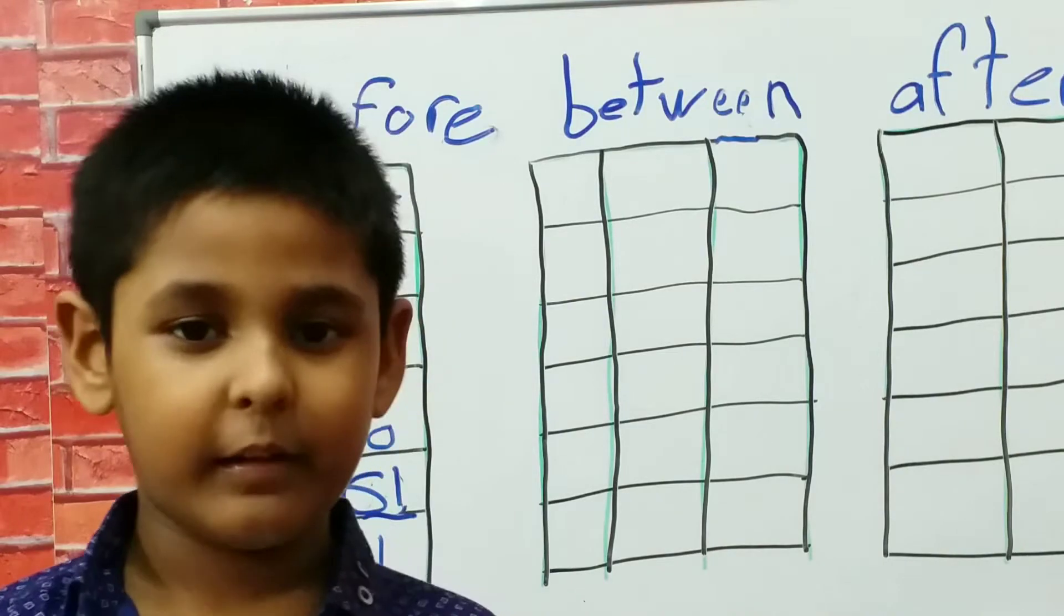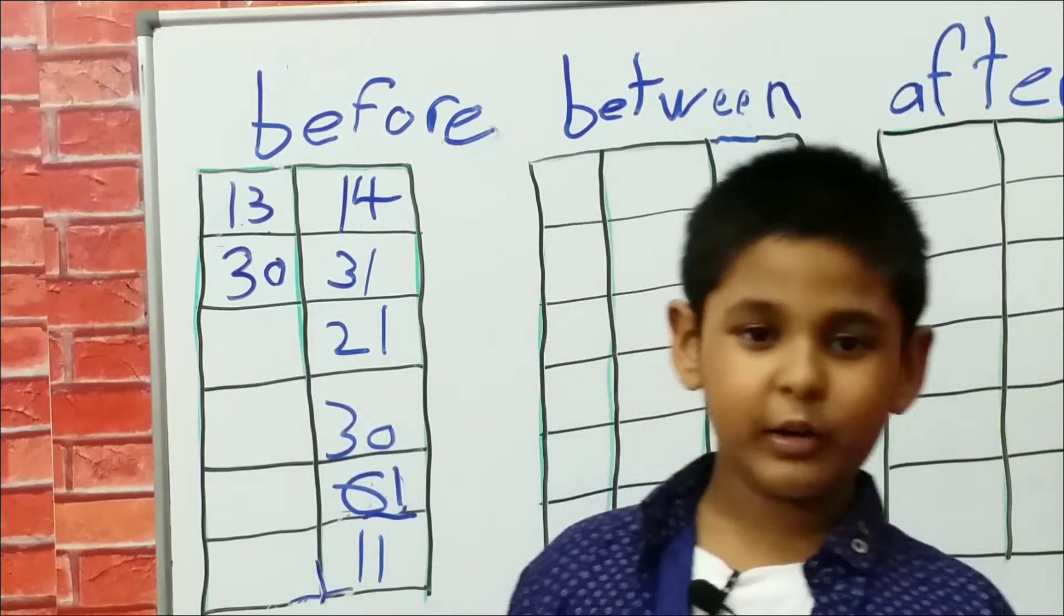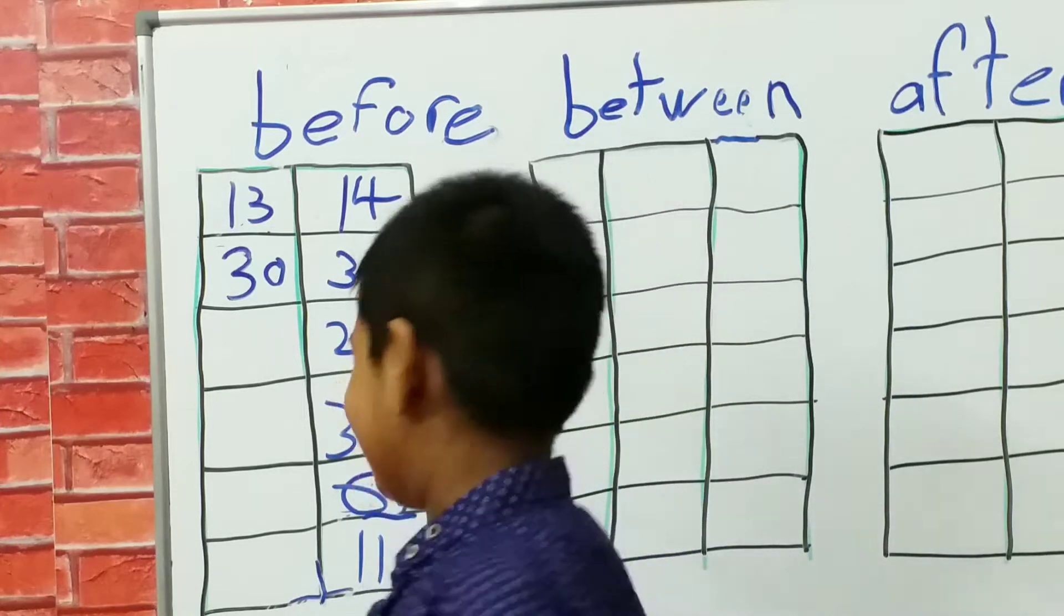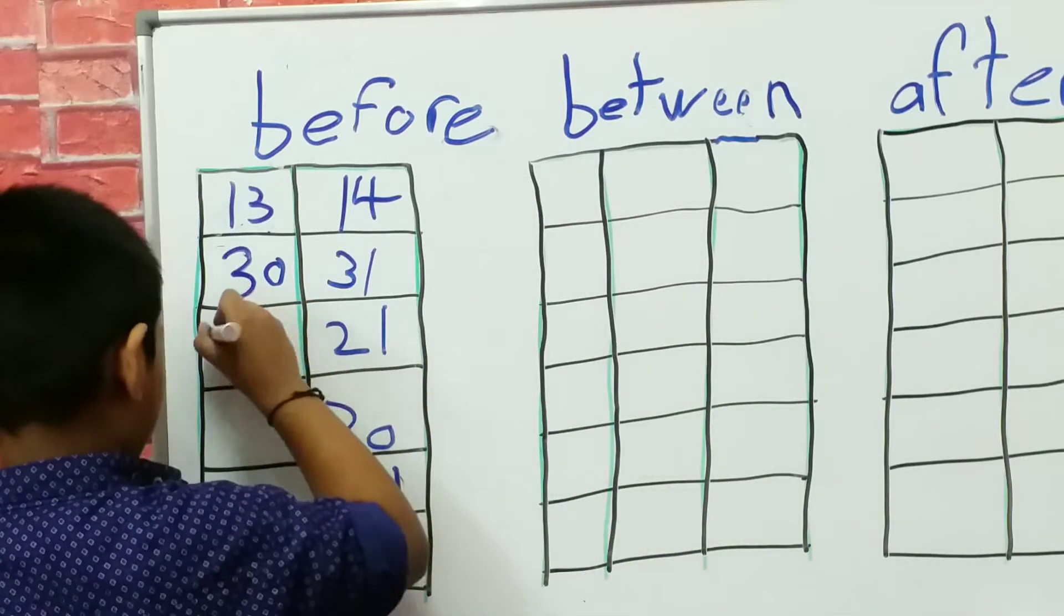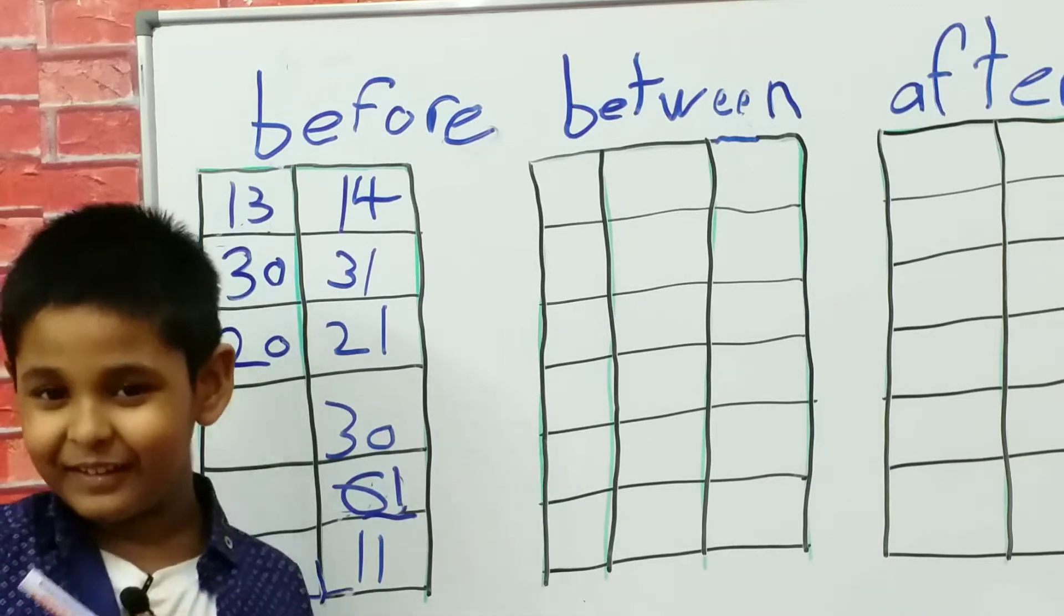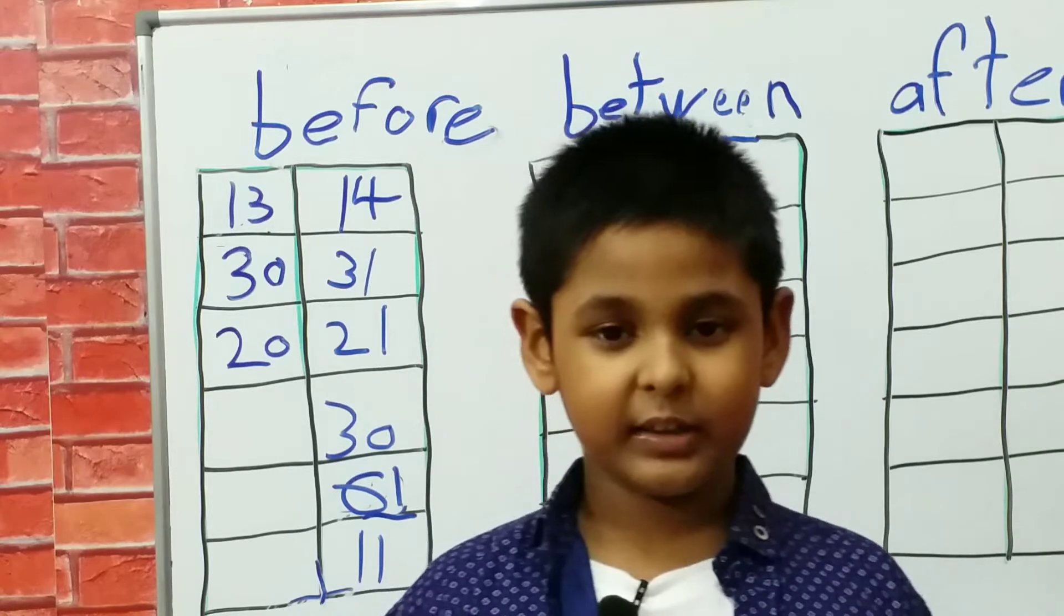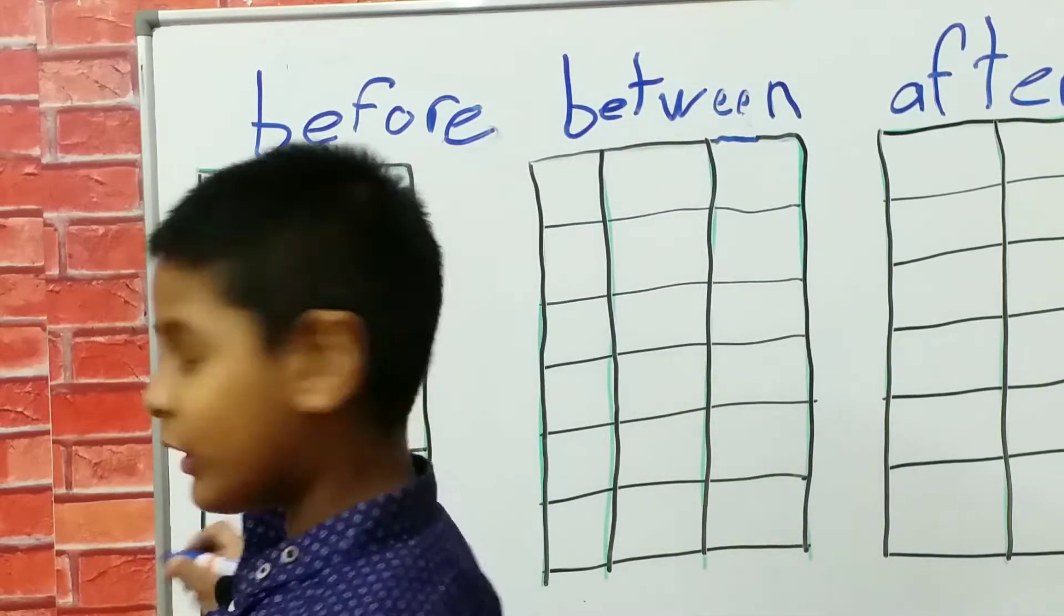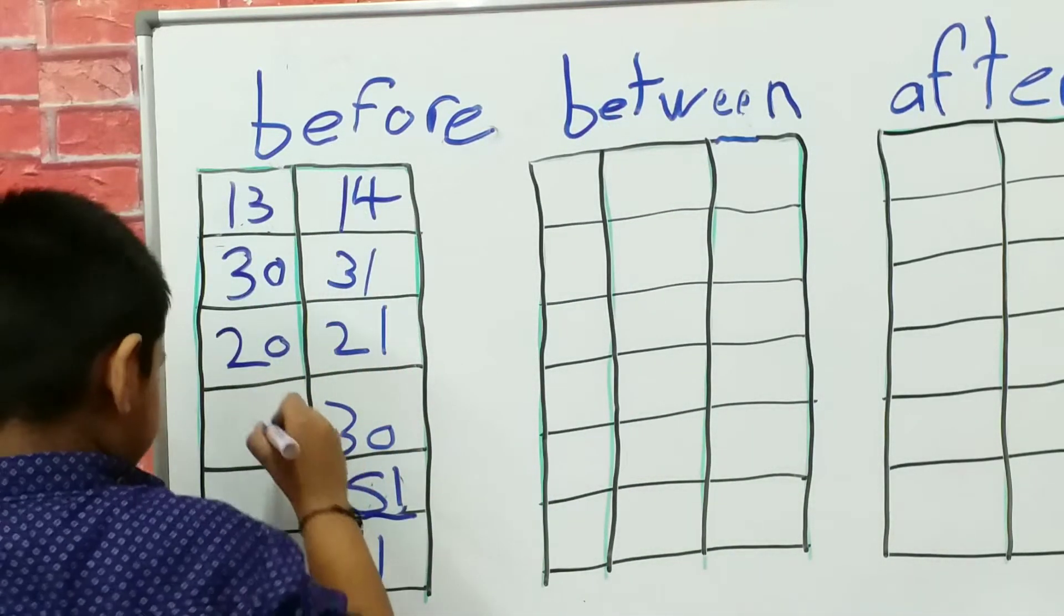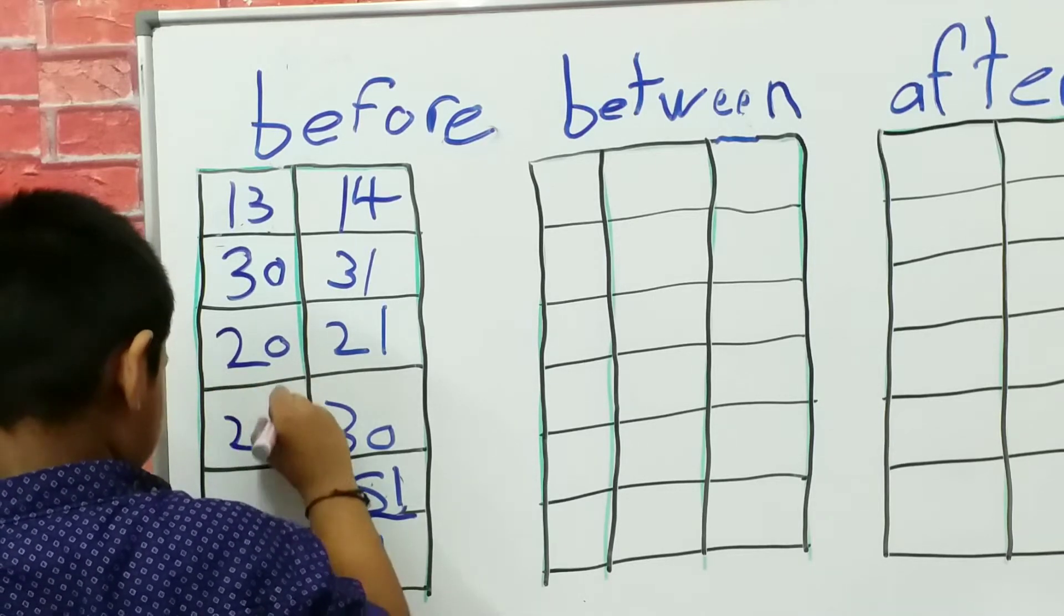See. Now 21 before 1, come. So students, 21 before 20. Let me write 20. 2 0. 20.